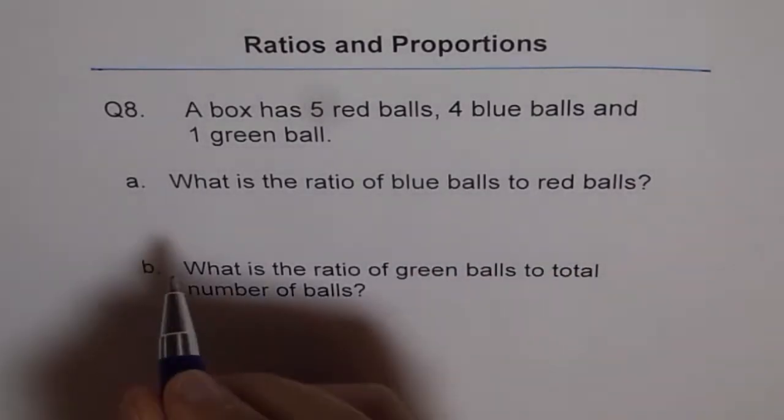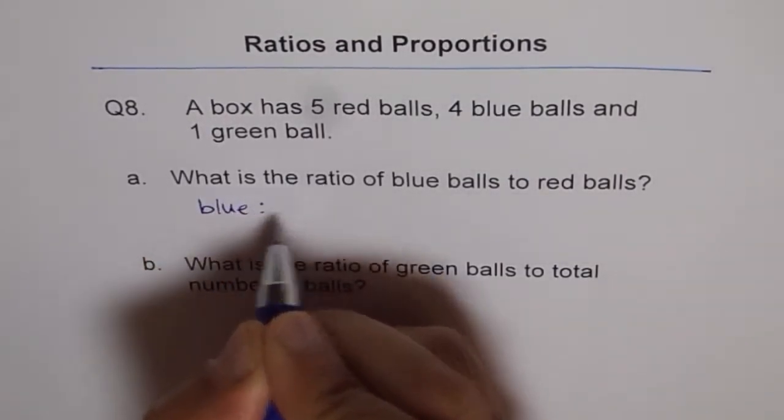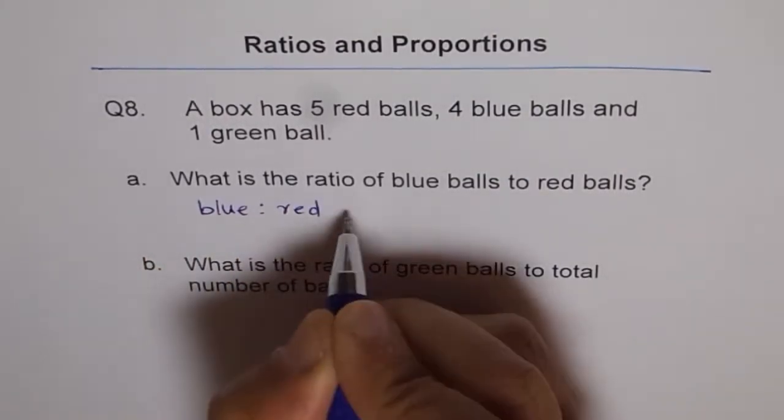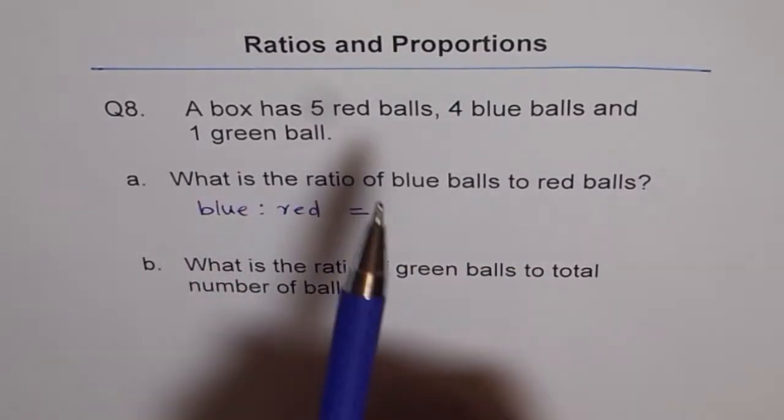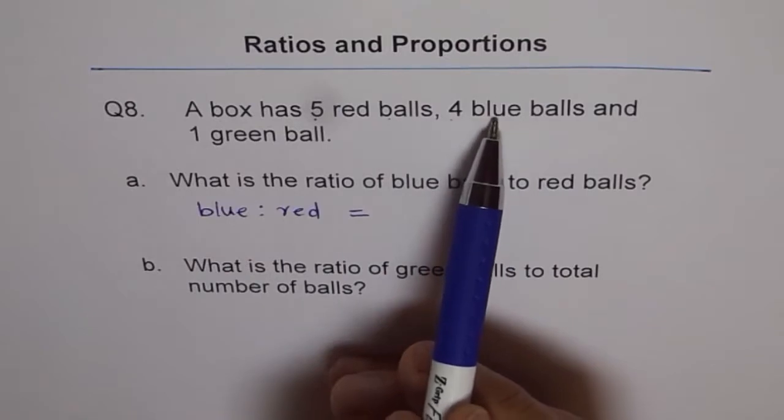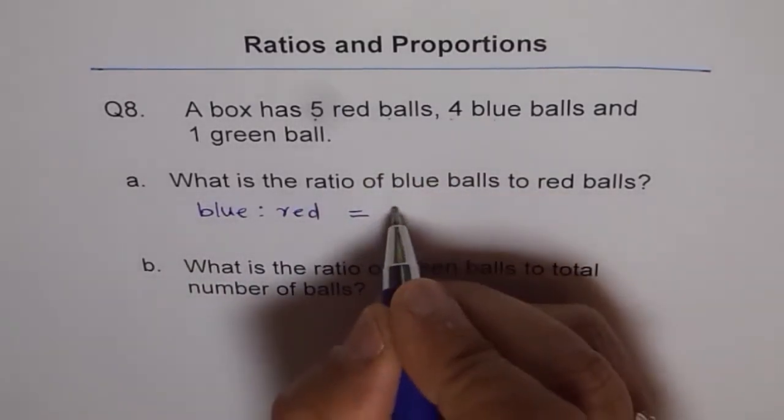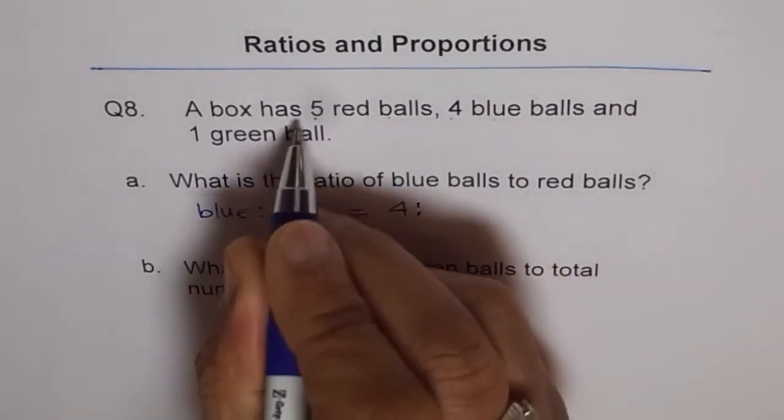So blue balls to red balls, we will write blue to red. Their ratio we want to find. So how many balls are there? There are 5 red balls and 4 blue balls. So we have to first write blue balls, which is 4. So write 4 is to 5.